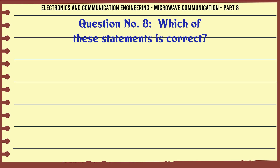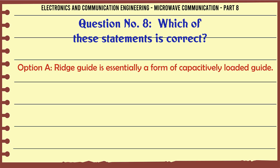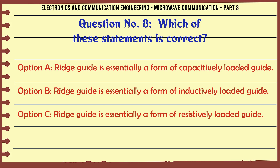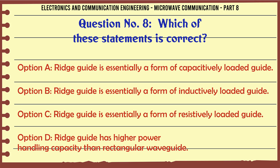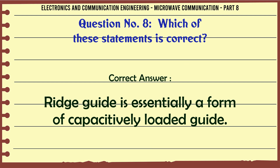Which of these statements is correct? A. Ridgeguide is essentially a form of capacitively loaded guide. B. Ridgeguide is essentially a form of inductively loaded guide. C. Ridgeguide is essentially a form of resistively loaded guide. D. Ridgeguide has higher power handling capacity than rectangular waveguide. The correct answer is: Ridgeguide is essentially a form of capacitively loaded guide.